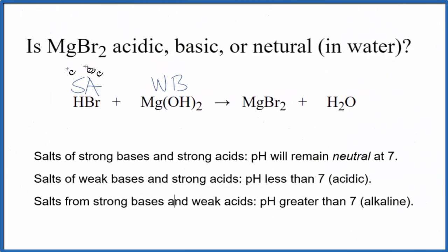So we look at our rules. We're looking for a strong acid and a weak base. Here's a weak base and a strong acid. So if we have a weak base and a strong acid come together, we expect, based on these rules, the pH will be less than 7. That means it's going to be an acidic solution.